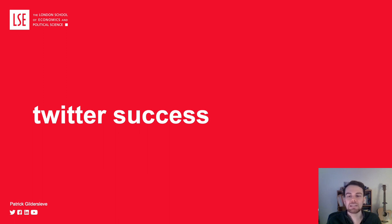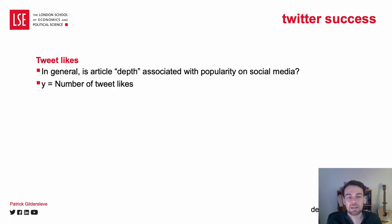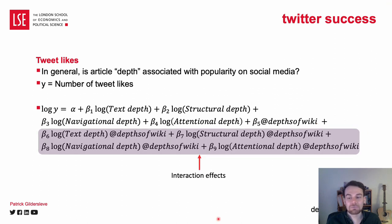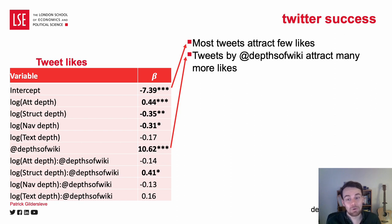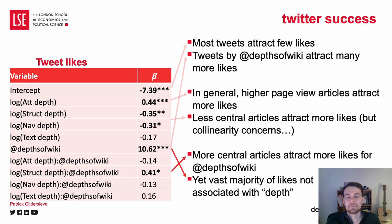In this final section, I look to model how properties of Wikipedia articles can predict their popularity on social media, or alternatively, naively use computer science to explain popular humour. I investigate how an article's unusualness or novelty across different measures might determine the number of likes it receives. The regression looks at how the number of tweet likes depends on the different text, structural, navigation, and attentional depth measures, whether it has been posted by Depths of Wikipedia, and interaction effects. We find that most tweets attract few likes, but articles tweeted by Depths of Wikipedia attract many more. Higher page view articles attract more likes and less central articles attract more likes, but there are some collinearity concerns. More central articles attract more likes for Depths of Wikipedia, but there is a small overall effect size. However, the key point is that the vast majority of tweet success is not associated with these depth measures.